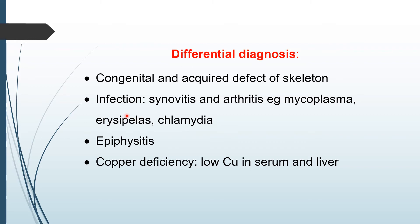Some infections cause synovitis and arthritis that also show similar symptoms, but these can be corrected by appropriate treatment and reversed very nicely within a few days. The common infections that produce synovitis and arthritis are mycoplasma infection, erysipelas infection, and chlamydia infection. Sometimes E. coli infection in calves also produces this type of symptom, but they can be corrected within a week or two.